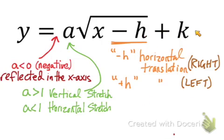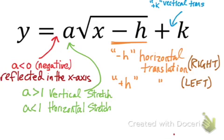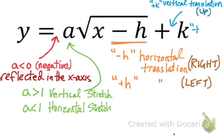Now let's see how k affects our graph. If you add a value outside the square root — a plus k — then we're vertically translating the entire graph up that many units. So plus 7, plus 10, or any positive k shifts the graph up. If it's a minus k, we still have a vertical translation, but we go down instead.